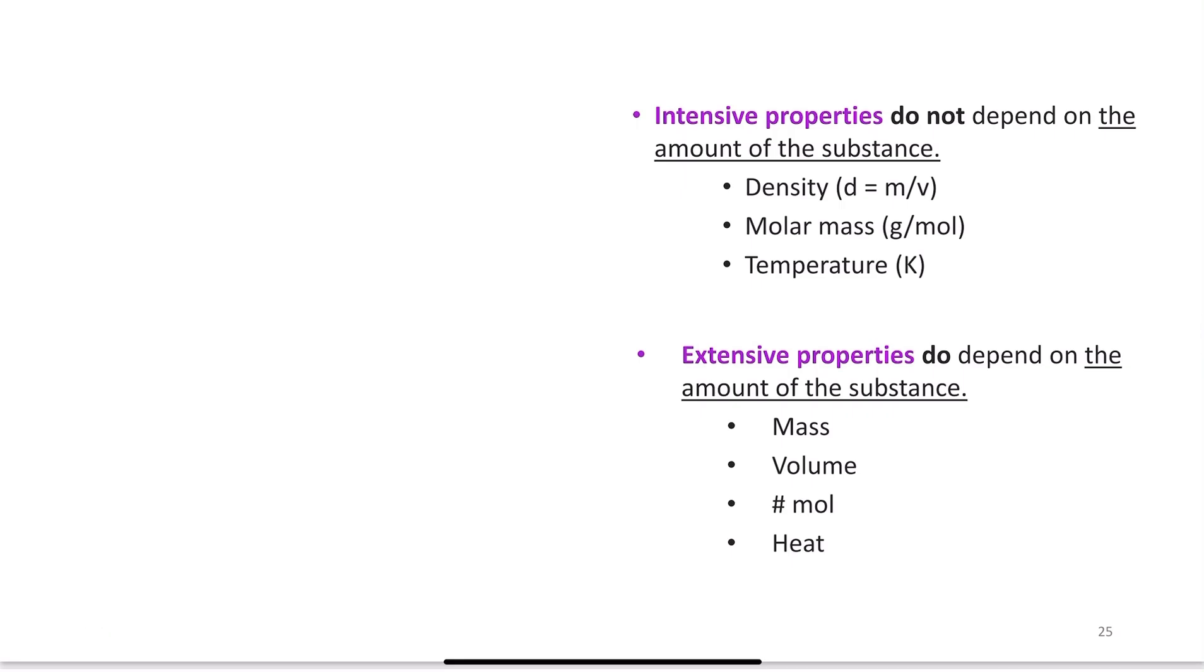Before we get started, I want to talk briefly about intensive and extensive properties. An intensive property is independent of the amount of substance present. For example, I have two bowls. In one bowl, I have 100 grams of gold. In the other bowl, I have 1,000 grams of gold. They have the same density, the same molar mass. If they are in the same room, they have the same temperature. It is independent of how much is actually there.